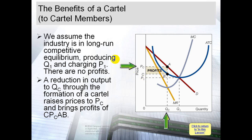We have P1 — this is the price before forming a cartel — and PC, the price after forming a cartel, where C stands for cartel. Q1 is the quantity produced before the cartel, and QC is the quantity produced after joining the cartel. The price is determined by where you intersect with the demand curve.